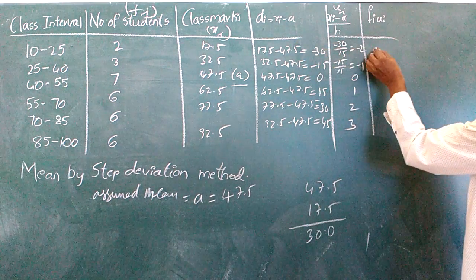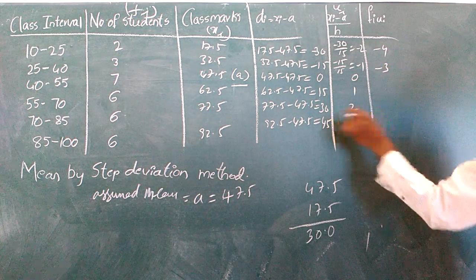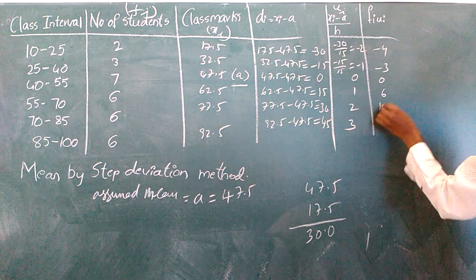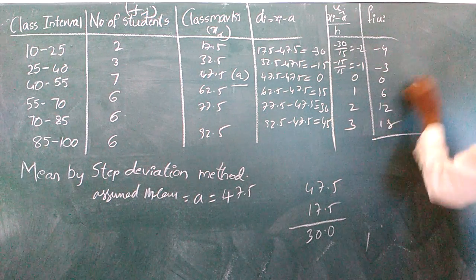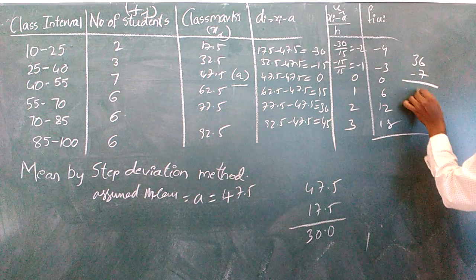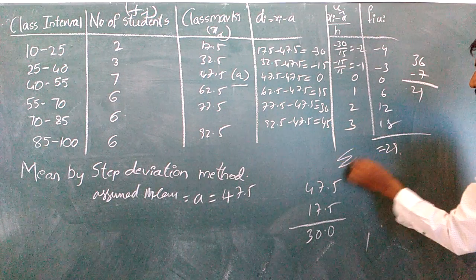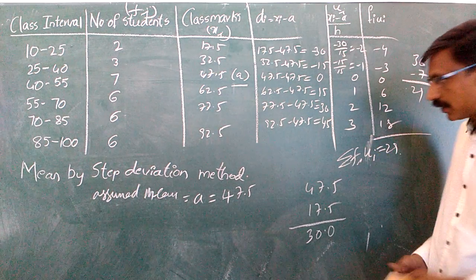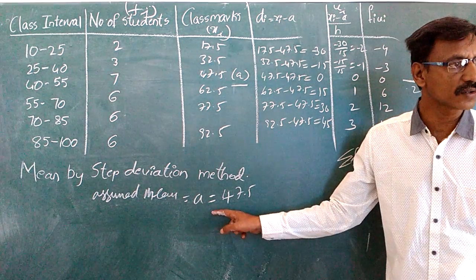The ui values are: minus 2, minus 1, 0, 1, 2, and so on. After multiplying by the frequencies fi, the sum Σfiui equals 29.